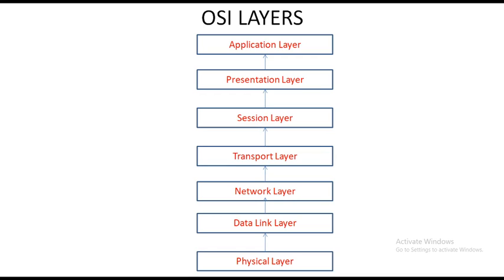These are the OSI layers. From the bottom we have to read and start. The first layer is the physical layer. The second layer is the data link layer. The third layer is the network layer. The fourth is the transport layer. The fifth is the session layer. The sixth is the presentation layer. And the seventh is the application layer.